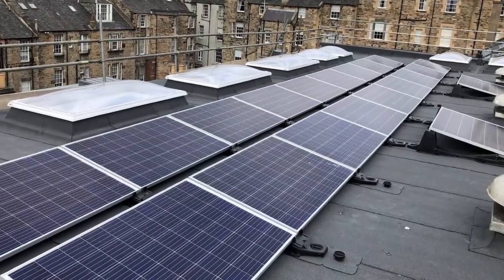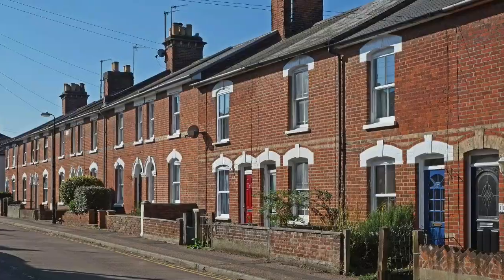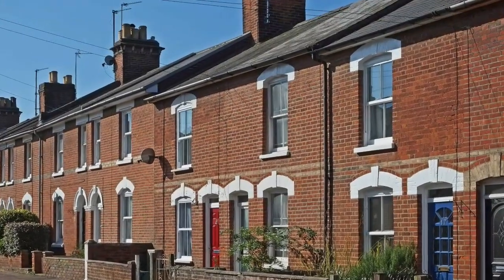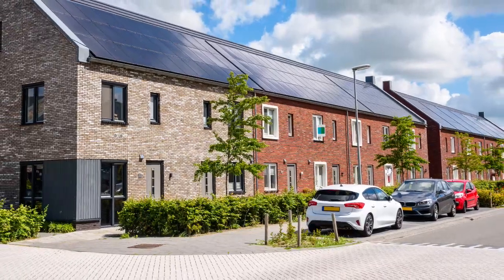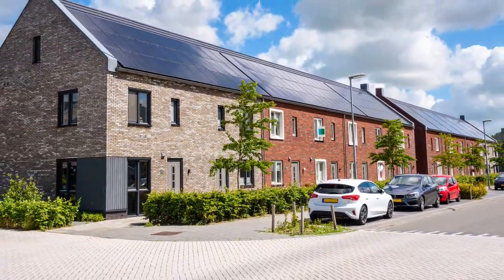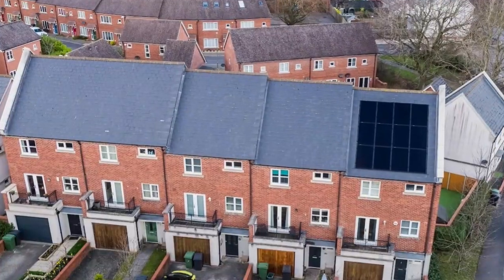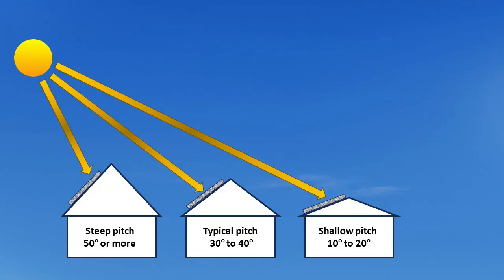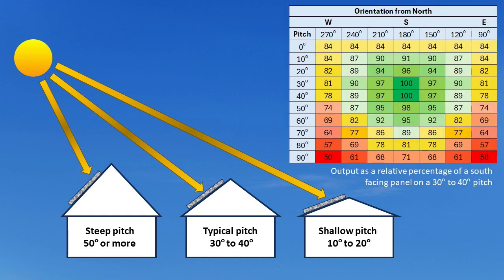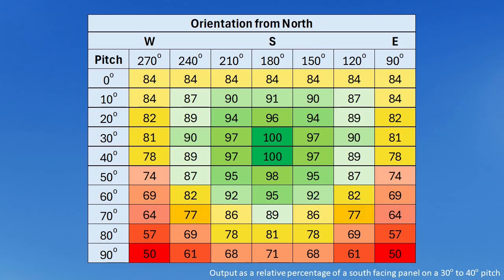Although solar panels can be installed on flat roofs, it's probably fair to say that the majority of properties in the UK have sloping or pitched roofs. In the UK, roofs tend to have a pitch of between 30 and 40 degrees, and all but the steepest roofs should be suitable for solar panels. The pitch of the roof determines the angle at which the solar panels will face the sun, and this will impact how much electricity they will generate. A sloping roof that faces south is therefore the best location to install solar panels.